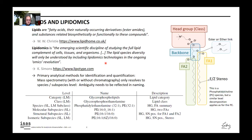Kai Simons, another well-known person in lipidomics, defines lipidomics as the emerging scientific discipline of studying the full lipid complement of cells, tissues, and organisms. The lipid species diversity will only be understood by including lipidomics technologies in the ongoing omics revolution. The primary analytical methods used for identification and quantification today are basically mass spectrometry techniques, with or without chromatography.